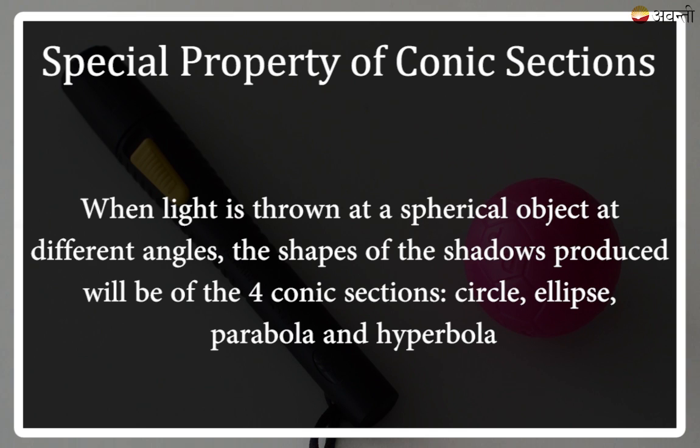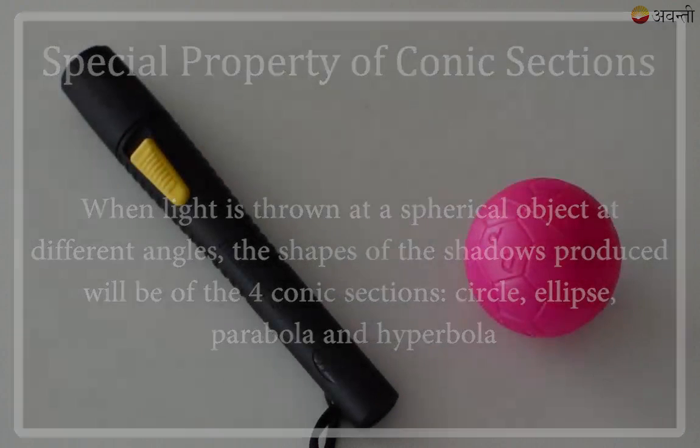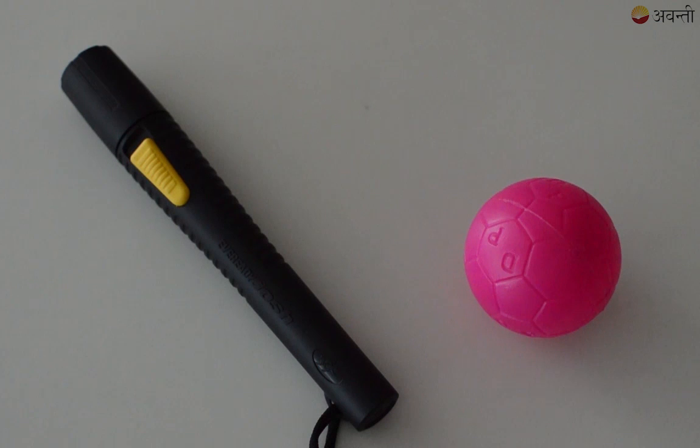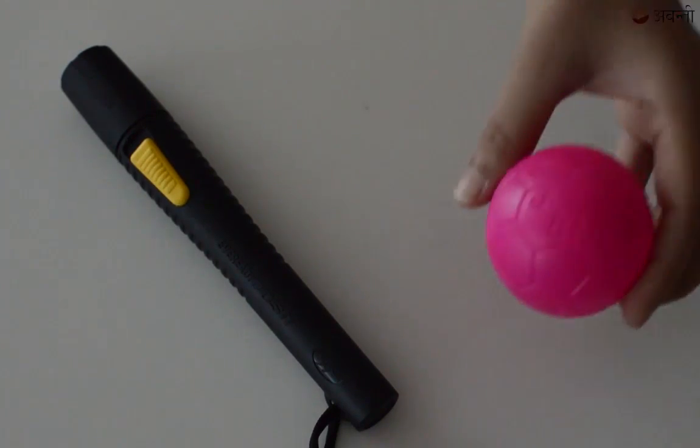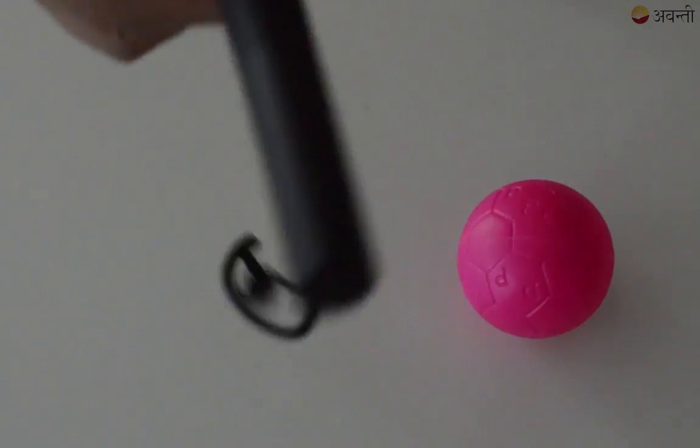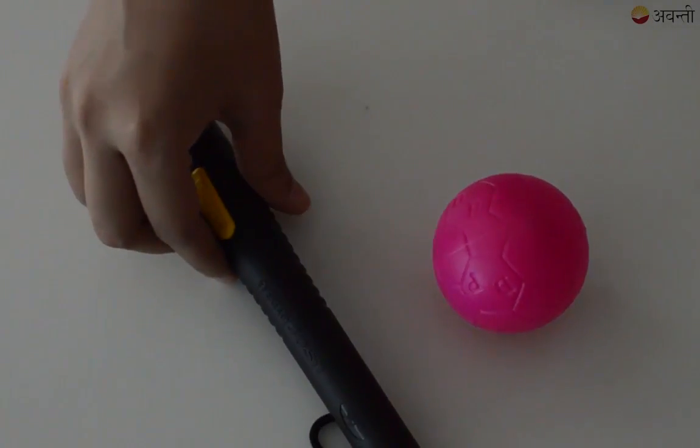Now we are going to observe a very interesting property of conic sections. According to this property, if light is thrown at a spherical object from different angles, we will get different conic sections as a shadow. Now we are going to look at the same thing in an experiment. For this experiment, I am going to need a ball and a torch so that I can throw the light on the ball. Now so that I can see the shadows clearly, I am going to dim the lights.